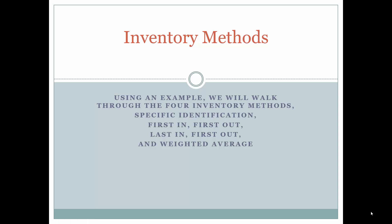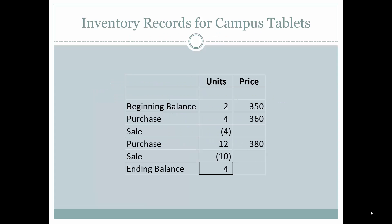Inventory methods. We'll use an example and walk through the four inventory methods: specific identification, first in first out, last in first out, and weighted average.